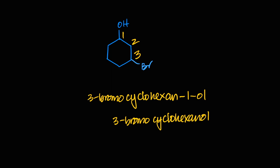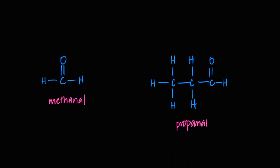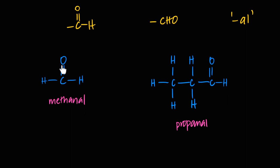Now let's look at aldehydes. Aldehydes have a C=O–H functional group — also written as CHO. They will always end in '-al.' The aldehyde group will always be on a terminal carbon atom because the carbon has a double bond to oxygen and a bond to H, leaving only one bond to connect to the rest of the chain — so it's always at the start of the molecule.